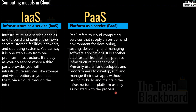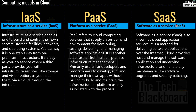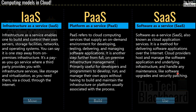PaaS is another step further from full on-premises infrastructure management and is primarily useful for developers and programmers to develop, run, and manage their own apps without having to build and maintain the underlying infrastructure. The third type of computing model is SaaS, or software as a service — also known as cloud application service. This is a method for delivering software applications over the internet. Cloud providers host and manage the software application and underlying infrastructure, handling maintenance like software upgrades and security patching. When moving from on-premises, you first move to IaaS, then progress to PaaS, and then eventually start to use SaaS.